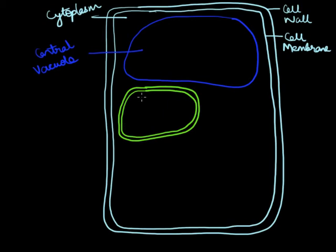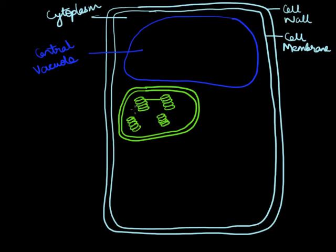Once we have drawn these two lines, let us see what is present inside the chloroplast. There are structures which appear like stacks of coins within the chloroplast, so let's draw them in place — three or four stacks should be good. These stacks are called grana, and each of those coin-shaped structures is called a thylakoid. The grana are connected to each other by a set of membranes, which also extend from the grana into the matrix of the chloroplast. This is the chloroplast.